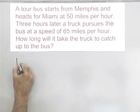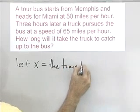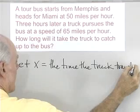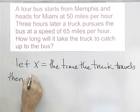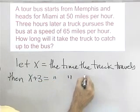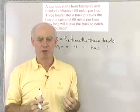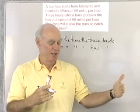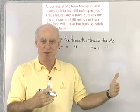Let's let x equal the time the truck travels. Then when the truck catches the bus, the bus will have been gone three hours longer than the truck, so x plus three will be the time that the bus travels. I'm letting x be equal to the thing we're asked for in the problem — how long does it take the truck to catch the bus. The bus will travel three hours longer than that because it takes off three hours earlier.